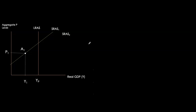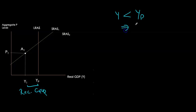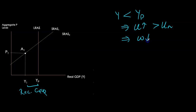I am currently at point A1 where price level is B1 and production is at Y1, which is below our potential. So whenever we have an output gap like this one, we call it a recessionary gap. In a recessionary gap, unemployment is now considerably higher and it's well above our natural rate. And because of high unemployment, wages in the long run are going to be driven down.